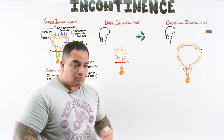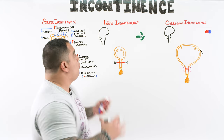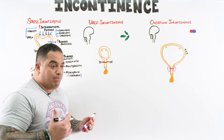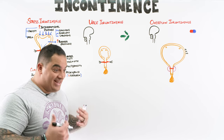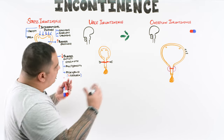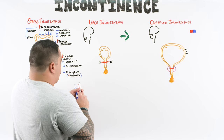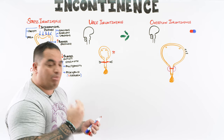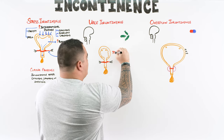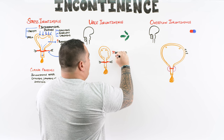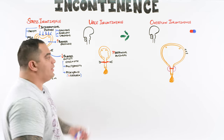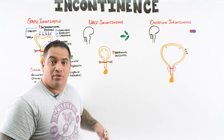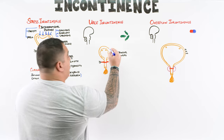Urge incontinence is the loss of urine preceded by an intense desire to go to the bathroom. The primary trigger is massive detrusor hyperactivity — the detrusor muscle is the muscle of the bladder, and when it contracts excessively, it increases bladder pressure. If bladder pressure overcomes bladder outlet strength, it leads to incontinence.